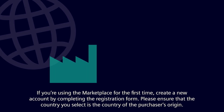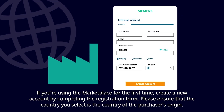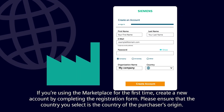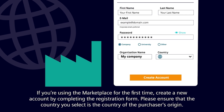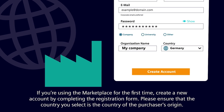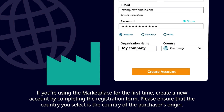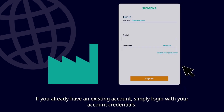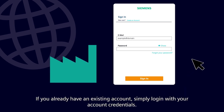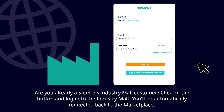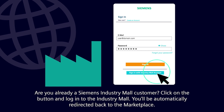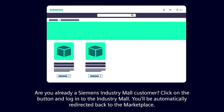If you're using the marketplace for the first time, create a new account by completing the registration form. Please ensure that the country you select is the country of the purchaser's origin. If you already have an existing account, simply log in with your credentials. Already a Siemens Industry Mall customer? Click the button and log in — you'll be automatically redirected back to the marketplace.